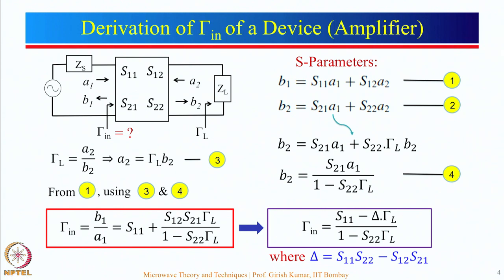The purpose of finding gamma_in is that we find its value after considering all these things, and then we design an impedance matching network so that maximum power transfer can take place from the source to the device. Maximum power transfer will take place when gamma_S — looking from the input side — is equal to gamma_in conjugate. For complex impedance, the load impedance should equal the complex conjugate of the source impedance. First we find gamma_in using this expression, then we design the impedance matching network such that gamma_S equals gamma_in conjugate.